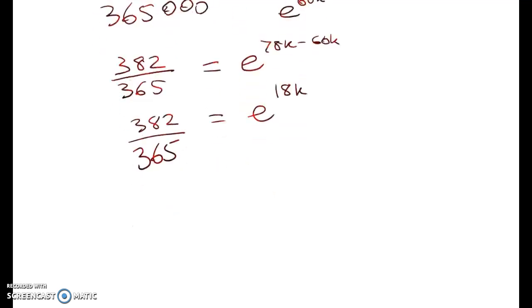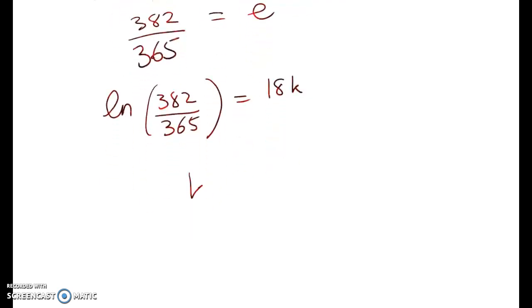I'm going to take logs of both sides and that gets me log of 382 over 365 is equal to 18k. K will equal 1 over 18 of this thing here.